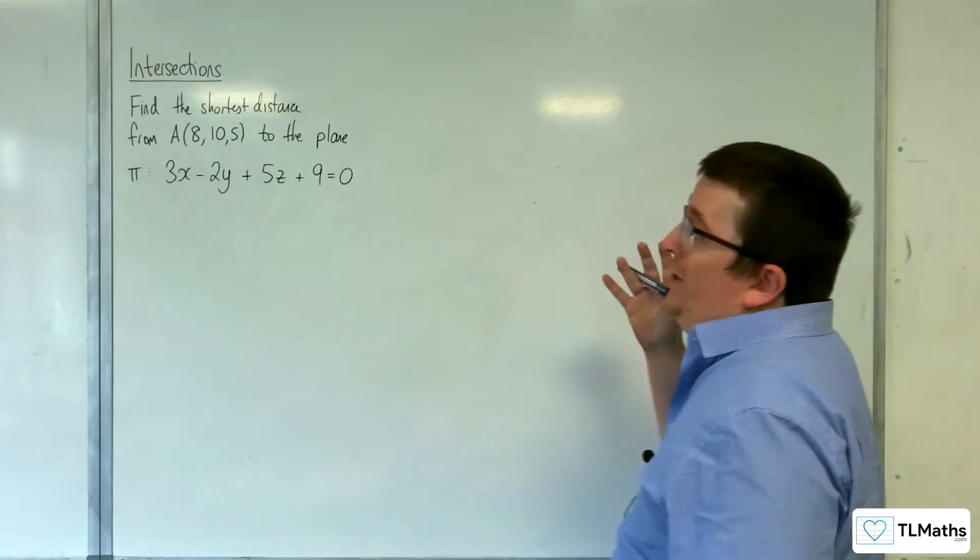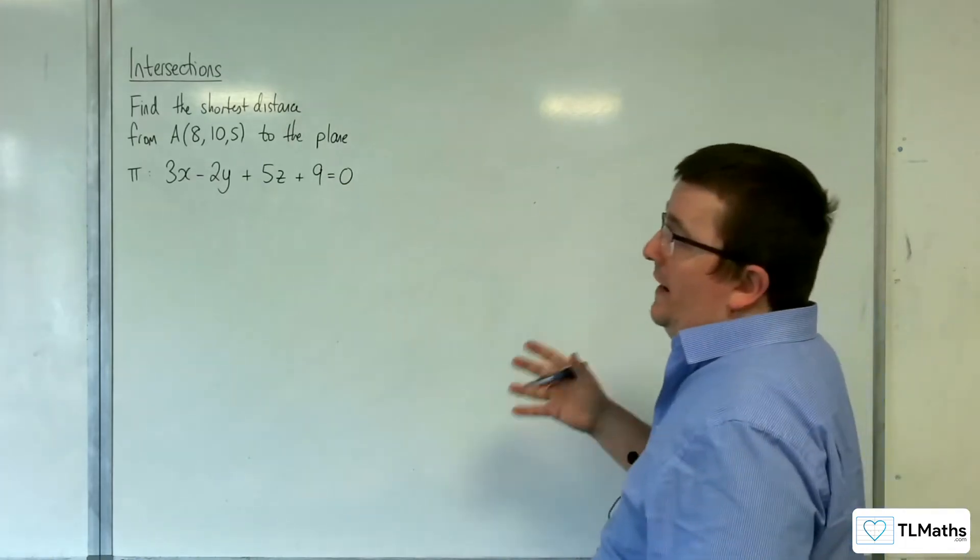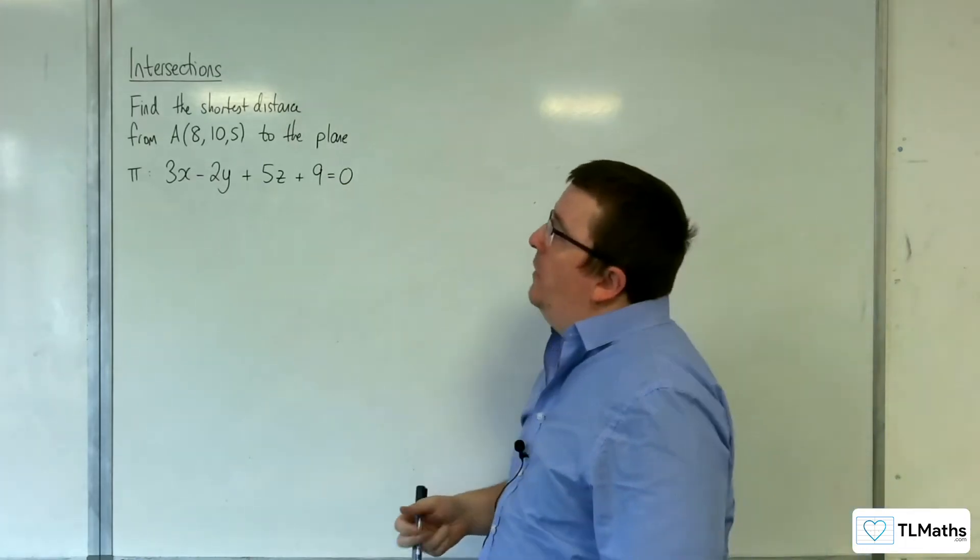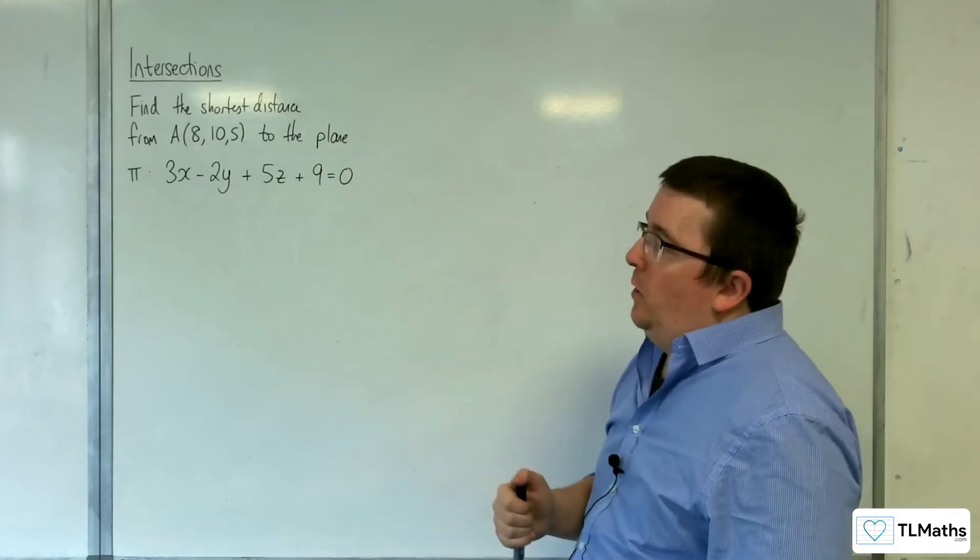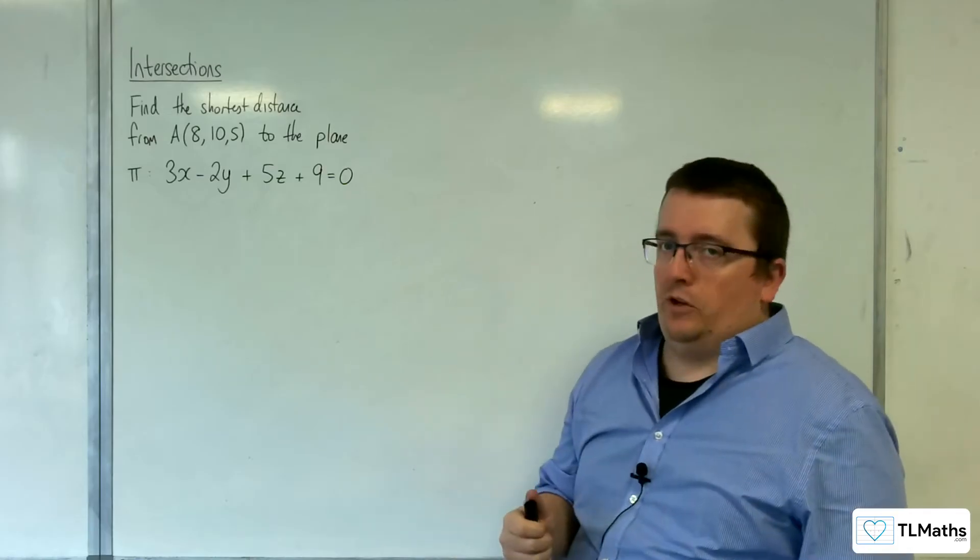In this video we're going to find the shortest distance from a point A with coordinates (8, 10, 5) to the plane pi with the equation 3x - 2y + 5z + 9 = 0.